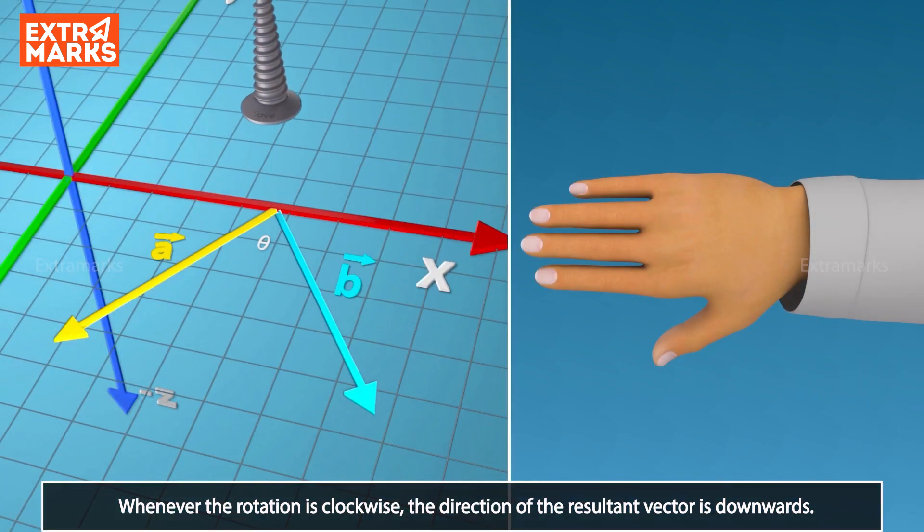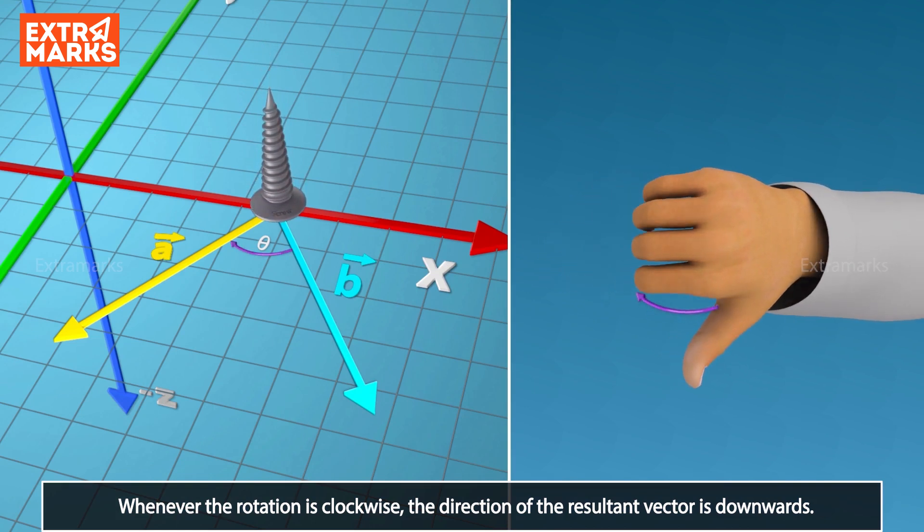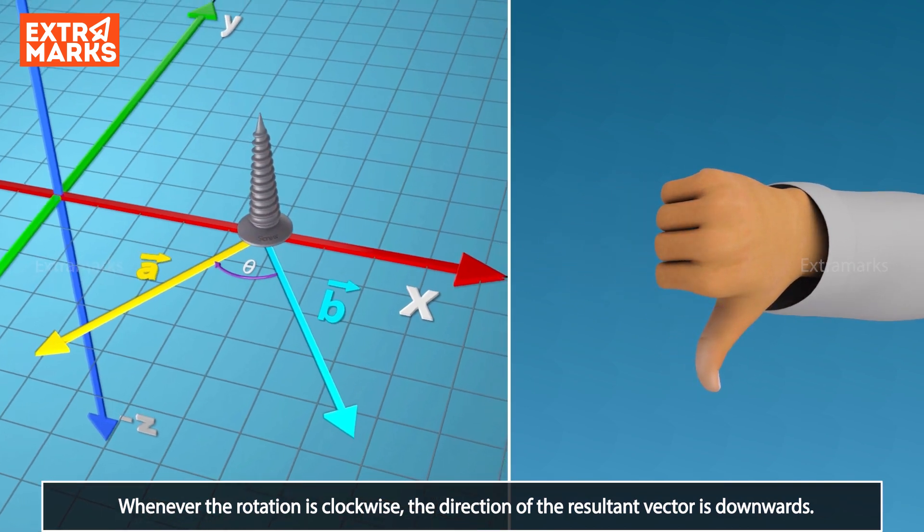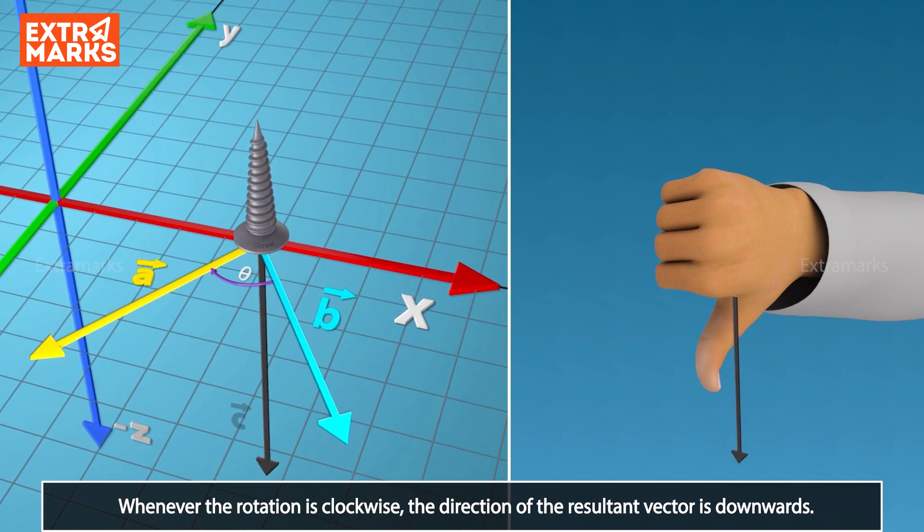Similarly, if you curl the fingers of your open palm in the direction from B to A, then your stretched thumb points in the direction of vector C, i.e. vector product B cross A.